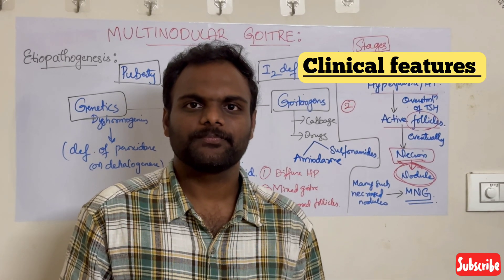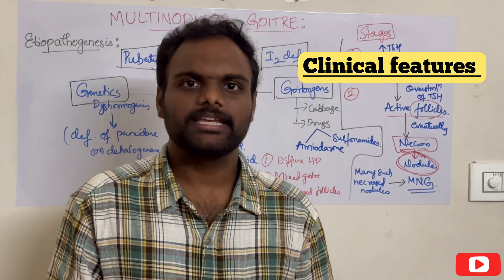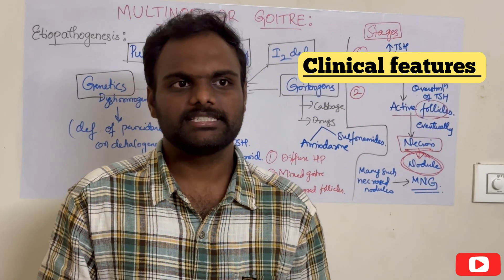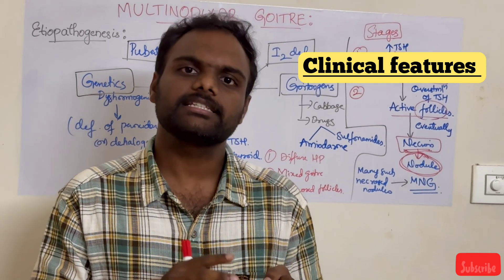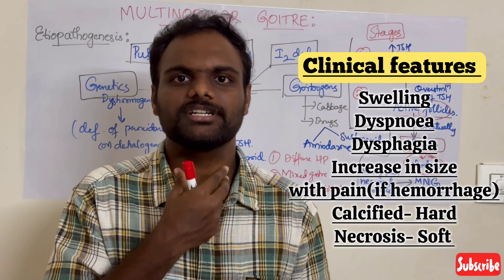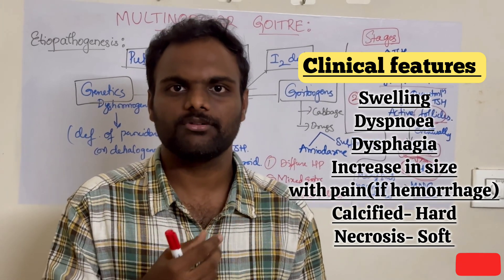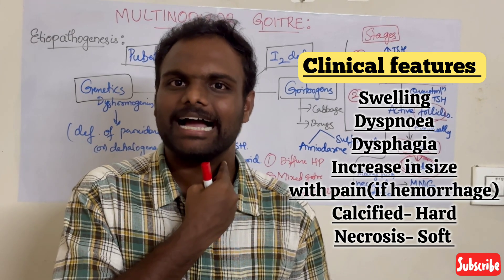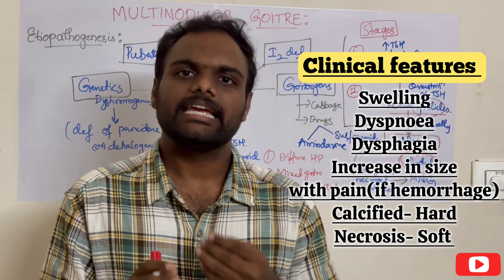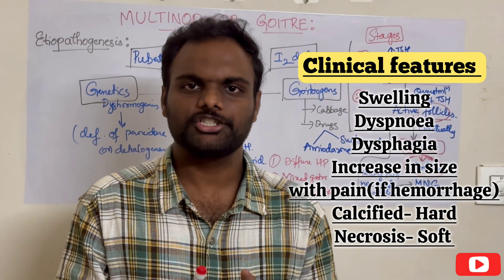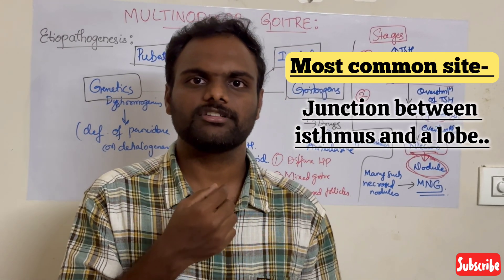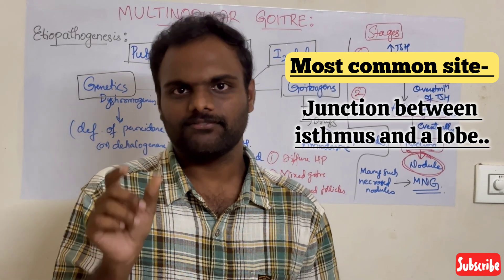Let us look at the clinical features using a patient presentation. A 25-year-old female came with chief complaints of swelling in the neck region with dyspnea and dysphagia. It is more common in females, with the most common age group being 20 to 40 years. Dyspnea and dysphagia are pressure symptoms due to enlargement of the thyroid gland on surrounding tissues. On examination, if the thyroid swelling is hard, it means it has undergone calcification, suggesting malignancy. If it is soft, it is in the stage of necrosis. When hemorrhage occurs in the tissue, the patient can come with sudden increase in size with pain. The most common site of nodule formation is the junction between the isthmus and one lobe of the thyroid.